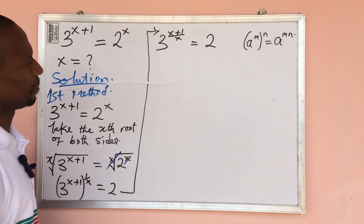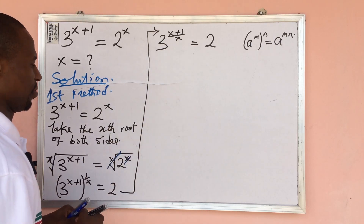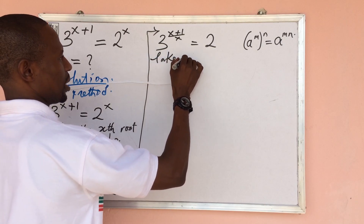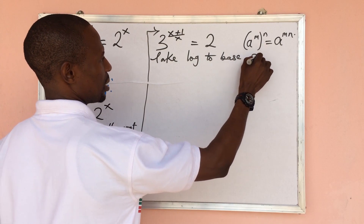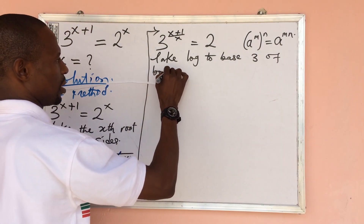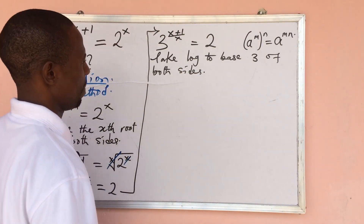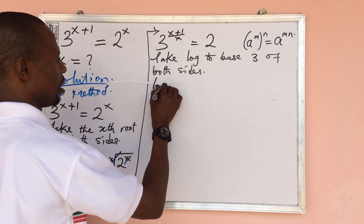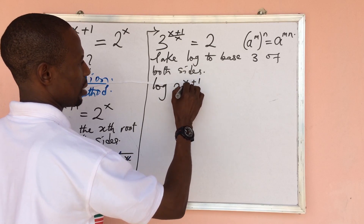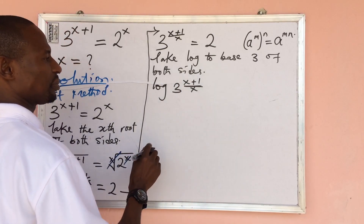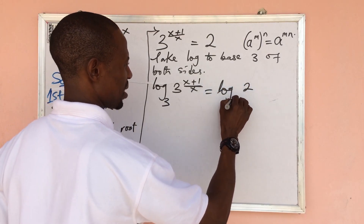At this point, let's take log to base 3 of both sides. If we do that, this gives us log base 3 of three to the power of (x plus one) over x, equal to log base 3 of two.